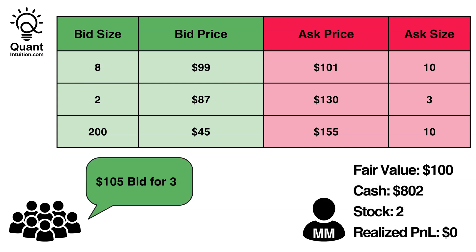Some time passes and another participant comes in and bids $105 for three shares. Since you are at the top of the order book, your sell order is hit and your position updates. Note that the buyer here actually gets a better price of $101 than the $105 they would have been willing to pay. We are now short one share of the stock; however, we have just realized a $4 profit, since in the previous trade we bought two shares at $99 and now sold two shares for $101.